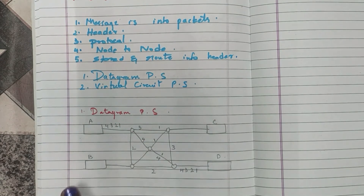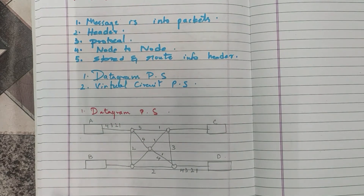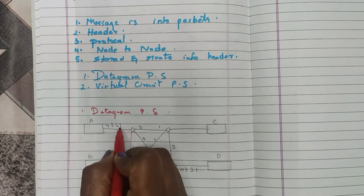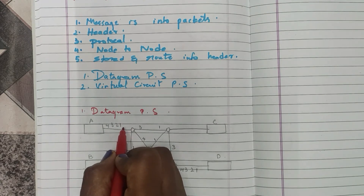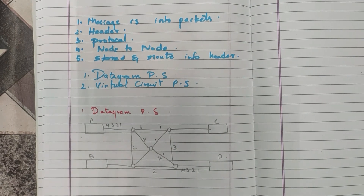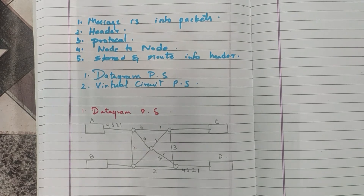In datagram packet switching, the message is divided into small streams of packets. Each packet is separately addressed, containing the destination address and the source address in its header section. Datagram switching is done in the network layer, which is one of the seven layers you will be learning about.